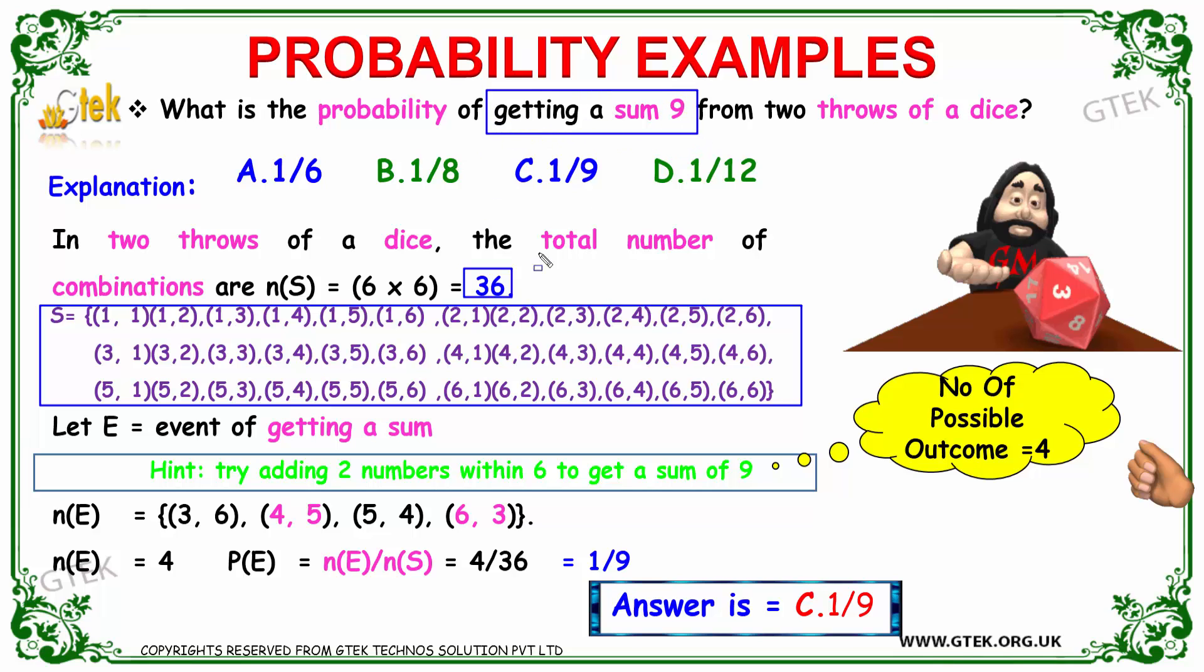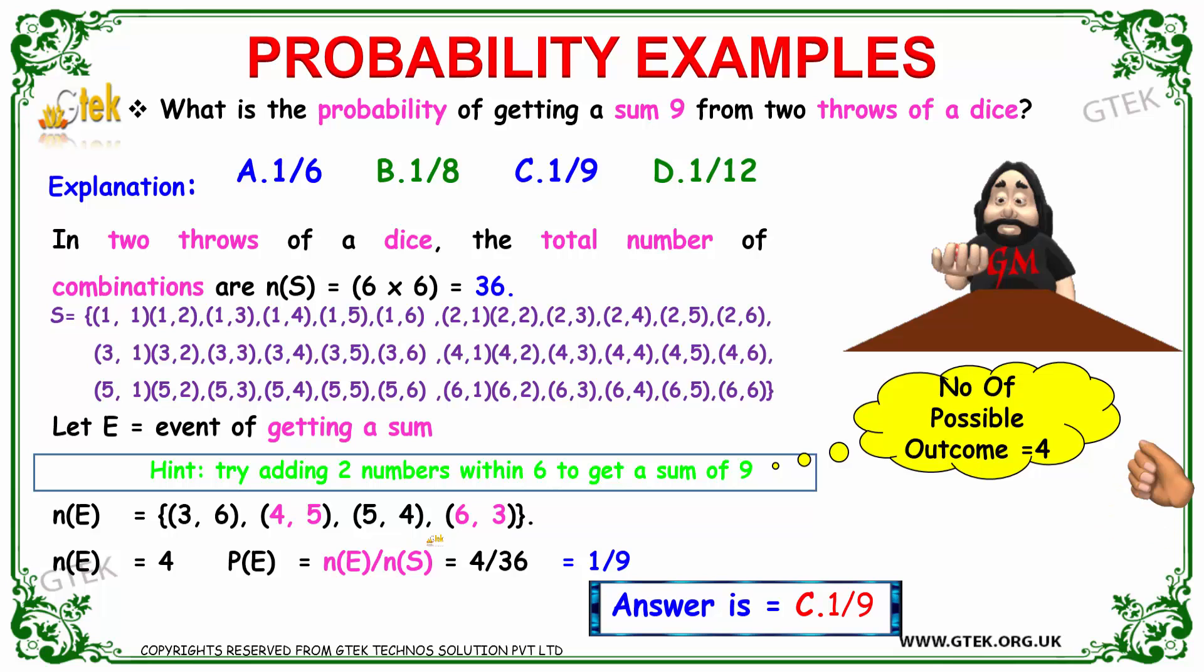The number of possibilities is 36. The given condition is we have to get a sum of 9. For sum 9, you'll get: 3+6, 4+5, 5+4, and 6+3. So there are four possibilities of getting a sum of 9. The probability is 4 divided by 36, which equals 1/9.